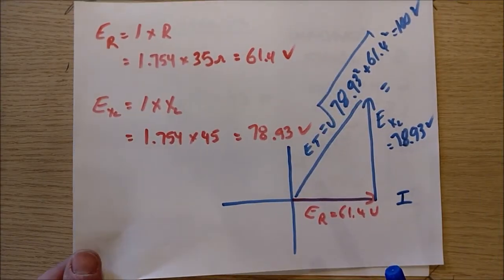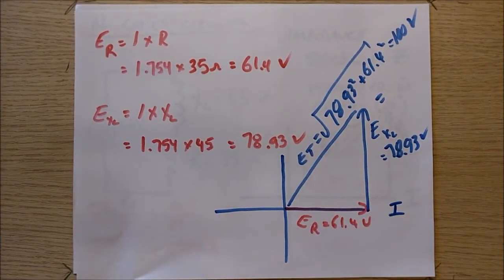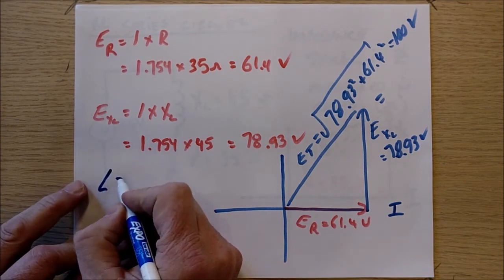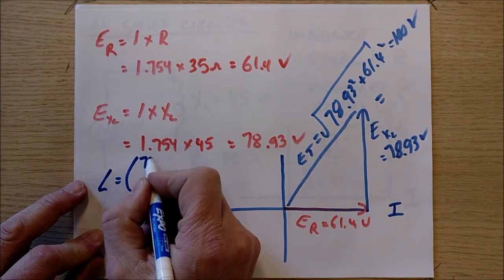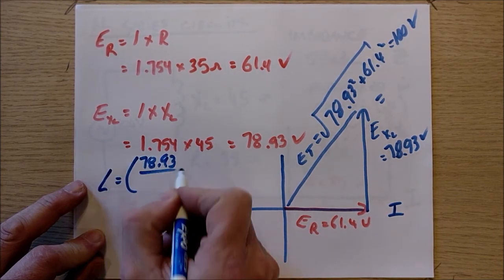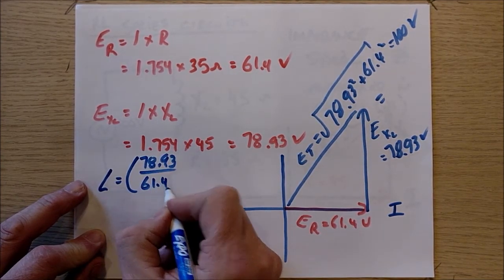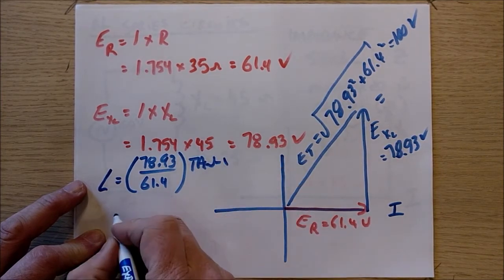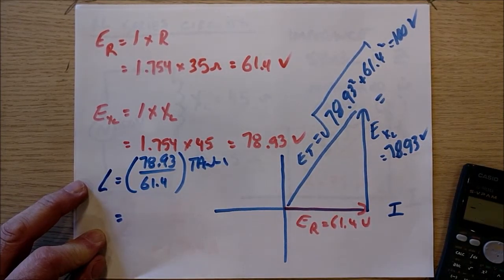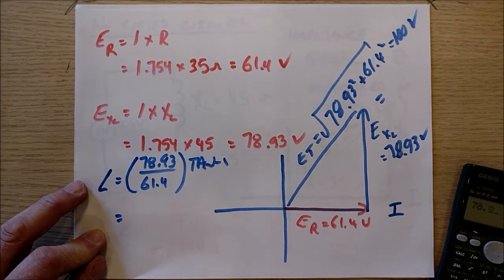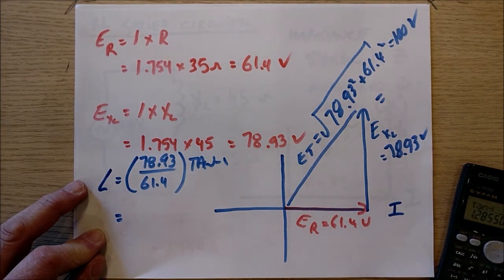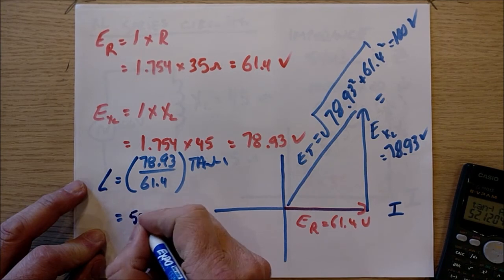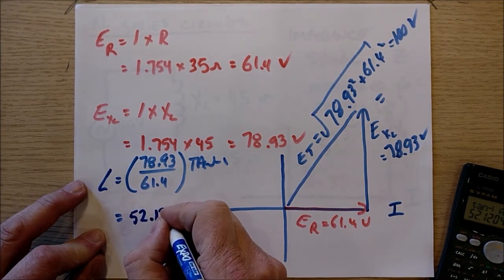So just for fun, I'm going to use this phasor diagram here to calculate the phase angle. The phase angle should be the opposite over the adjacent, inverse tan, 78.93 over 61.4, tan to the negative 1. And I'm going to calculate it off camera here. 78.93 divided by 61.4 equals shift tan equals 52.12 degrees.